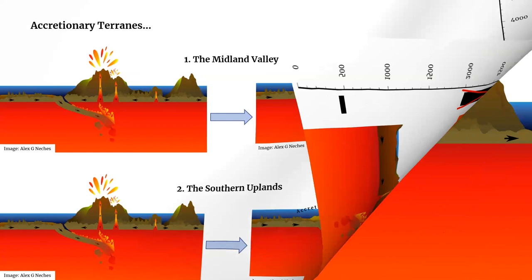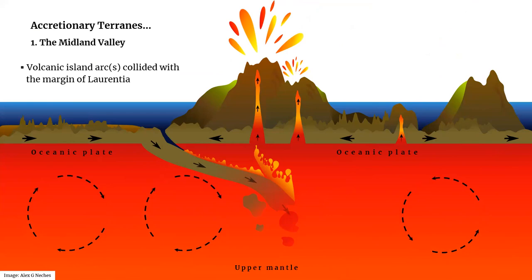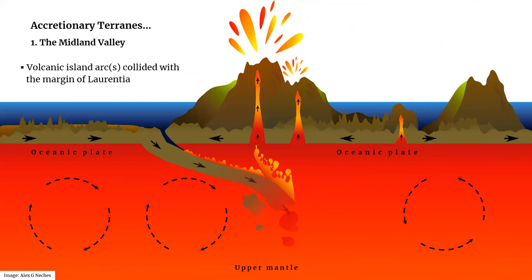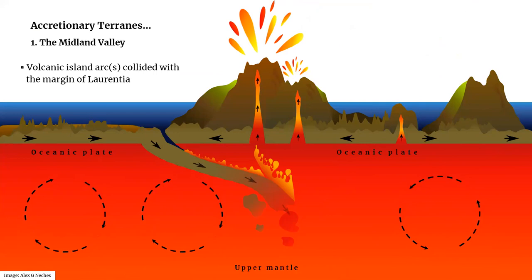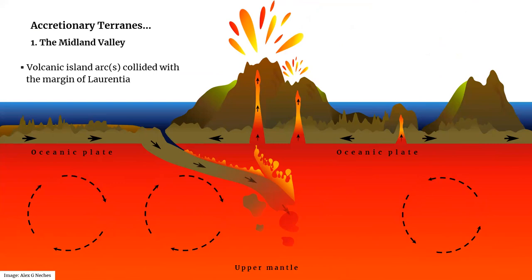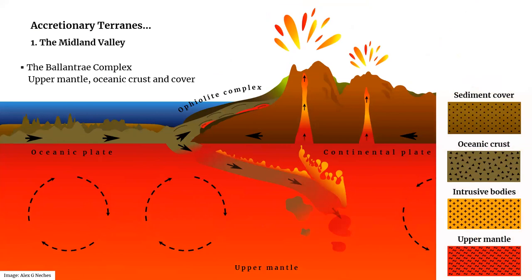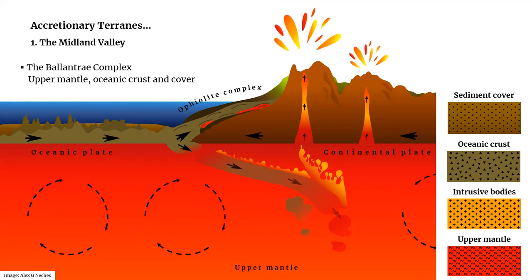The Midland Valley originated as one or several volcanic island arcs that formed in the Iapetus Ocean, advanced towards the continent of Laurentia, and collided with it. Much of the remains of this arc makes the unexposed foundation of the Midland Valley, and only small remnants outcrop within the Ballantrae ophiolite complex, which represents a heavily dismembered section through the Earth's upper mantle, the oceanic crust and its sedimentary cover.